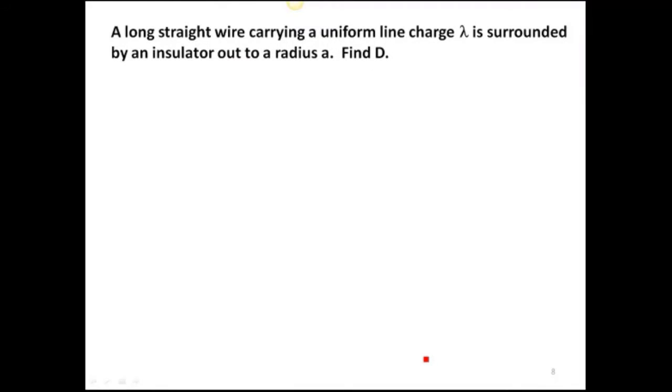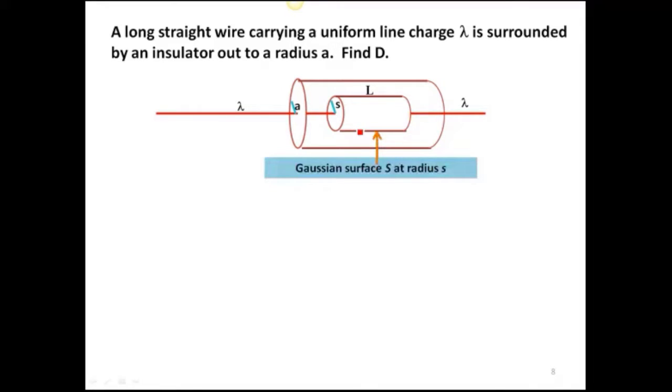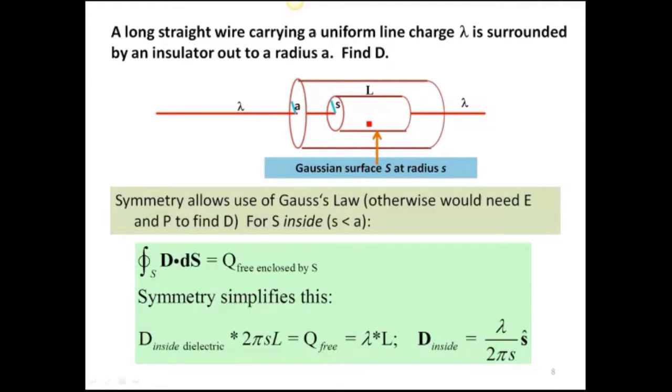Here's another example. There's a long straight wire carrying a uniform line charge, lambda, surrounded by an insulator out to a radius A. So here's the picture, fairly crude. Here's the cylinder that has insulation in the region from 0 to S equal A. Here's the line charge which passes through that. I've chopped these off, but really consider this to go minus infinity to plus infinity or whatever. It's really long. What we're going to do is put a Gaussian surface. Now we're talking about inside the dielectric. So S is less than A. The radius is S, and we'll just take the length capital L. Let's look at Gauss's law on that surface.